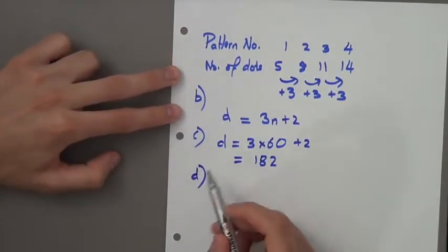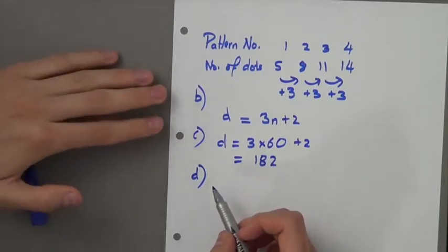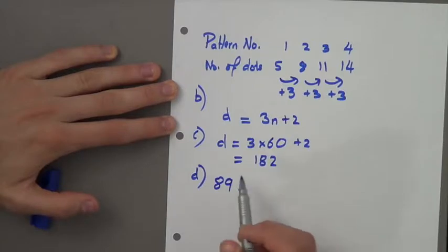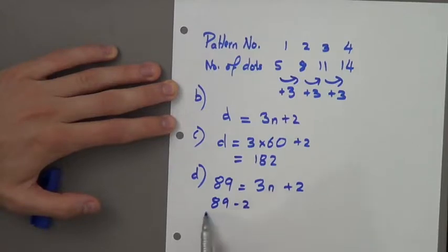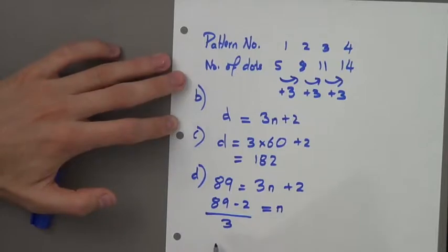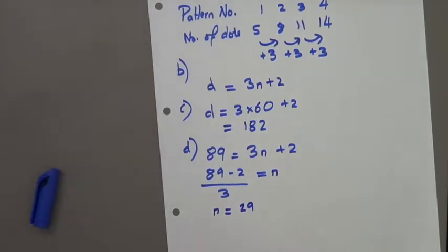Part D says: find the number of the pattern that has 89 dots. This time we solve D for 89 and make n the subject. That's 89 minus 2 divided by 3 gives us n, which equals 29.